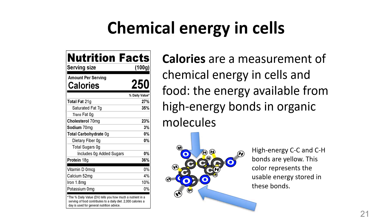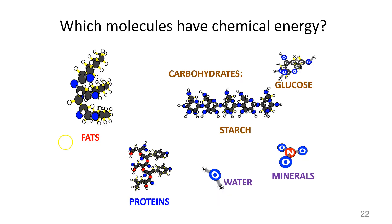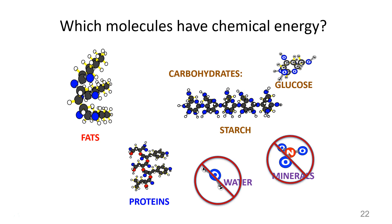Our discussion of what cells are made of wouldn't be complete without looking at energy. On a food label, you'll see calories listed — calories are a measurement of energy, specifically the chemical energy found in cells and food. You can see a molecule from a cell that has high-energy bonds: C-C and C-H bonds are where the chemical energy is stored. Most molecules that cells are made of have chemical energy. Which molecules do not? The inorganic ones — water and minerals have no high-energy bonds and no chemical energy.